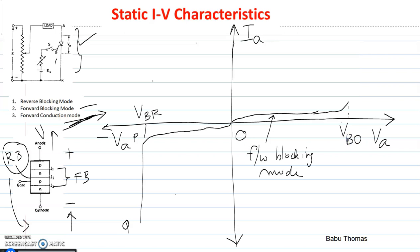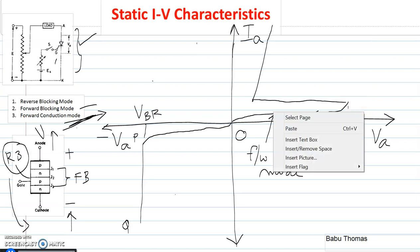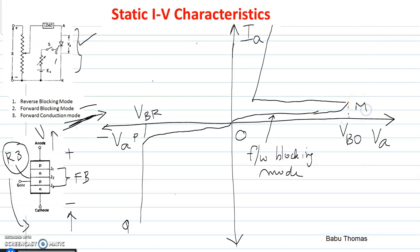When the voltage reaches VBO, the device goes into the conduction mode. When it goes into conduction mode, the voltage across the device reduces to a lower value — it may be 1 or 2 volts. We can imagine this as a switch. So when the device goes into conduction mode, the voltage across it gradually reduces to 1 or 2 volts and the current starts increasing. I will name this breakover point as M.